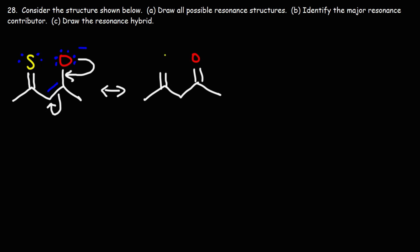So we're going to get a carbanion — a carbon with a negative charge. That's the first resonance structure that we can draw.